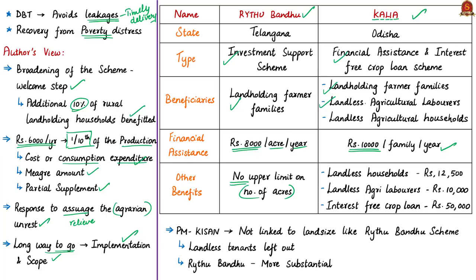Under the Kalia scheme, financial assistance for landless households is Rs. 12,500, and it also provides an interest-free crop loan of up to Rs. 50,000. Looking at these two state schemes, you can see that PM-Kisan is based on them. The shortage in implementation and scope of PM-Kisan, which we mentioned earlier, becomes apparent when compared to these schemes. The author notes that the cash transfer under PM-Kisan is not linked to the size of the farmer's land like the Raitubandu scheme, and landless tenants have been left out under both PM-Kisan and Raitubandu.